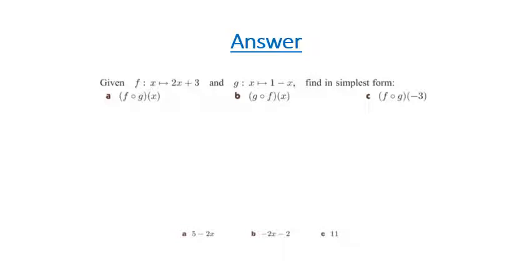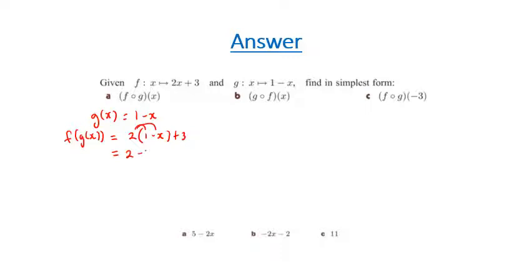We're looking for f of g of x. Now g of x is equal to 1 take x. And f of g of x is equal to 2 lots of 1 take x plus 3. If I expand this out using the distributive law, I get 2 take 2x plus 3. I can now collect the like terms of 2 and 3, and that gives me 5 take 2x — which is our answer.